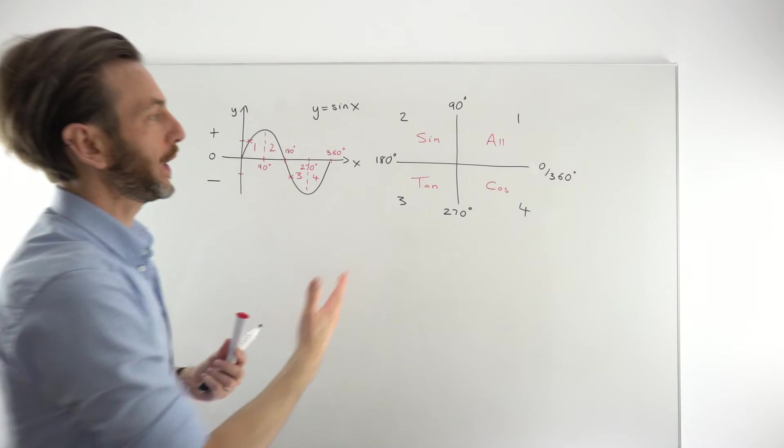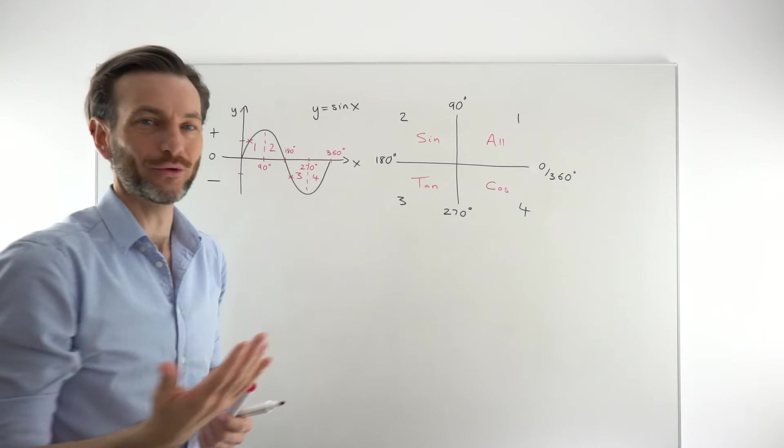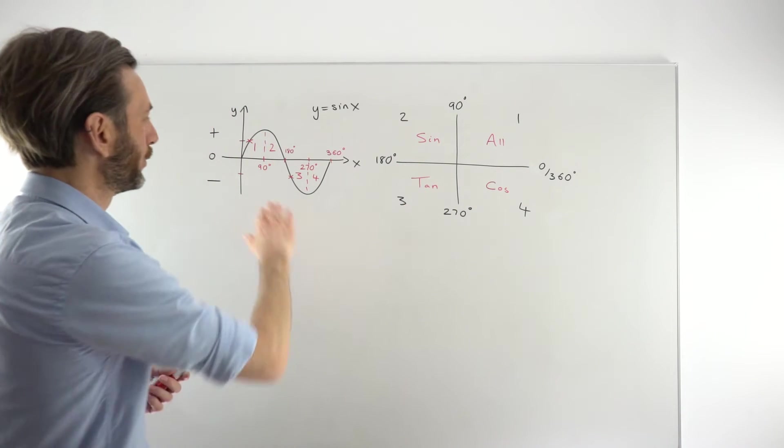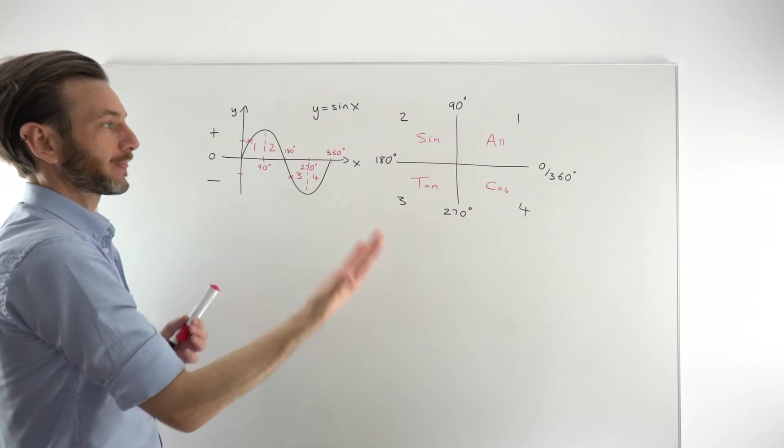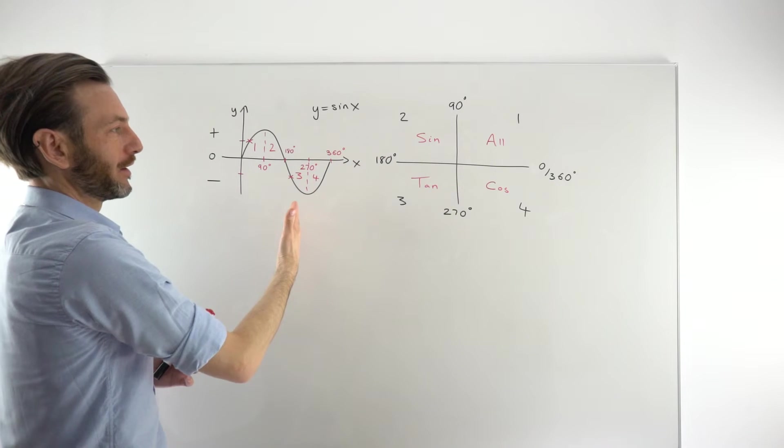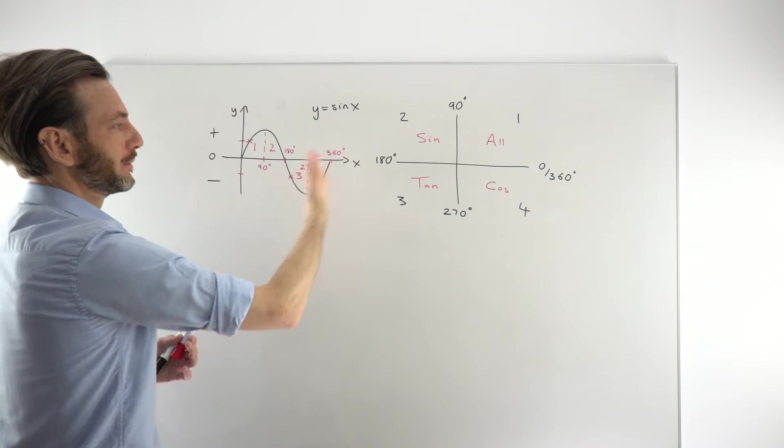It's just basically a quick method of allowing you to check where a function is positive or negative without having to draw out the graph. It's not really much quicker than the graph, to be honest. You should ideally be able to do both.